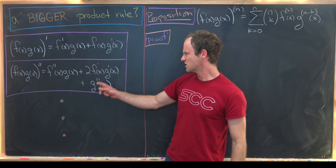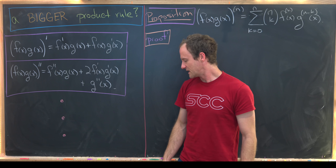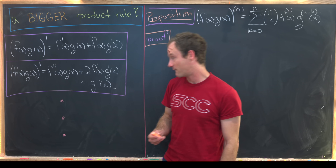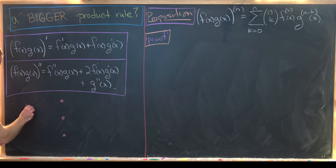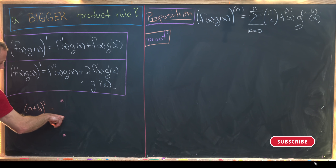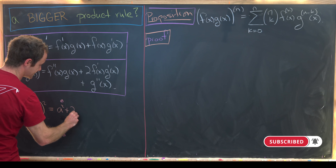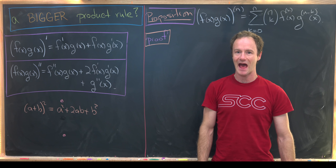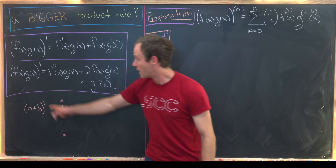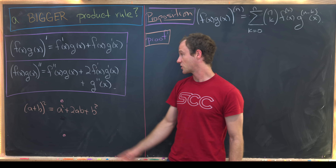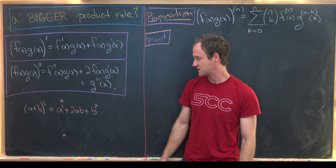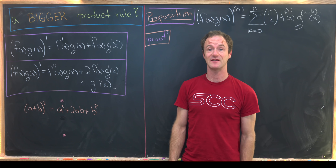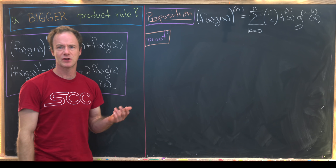This looks mysteriously familiar. Compare it to the well-known formula (a + b)² = a² + 2ab + b². It looks like the expansion of the second derivative in terms of derivatives of the component functions occurs just like squaring out a binomial. And in fact, that's what happens in general — this is sometimes called the Leibniz rule.